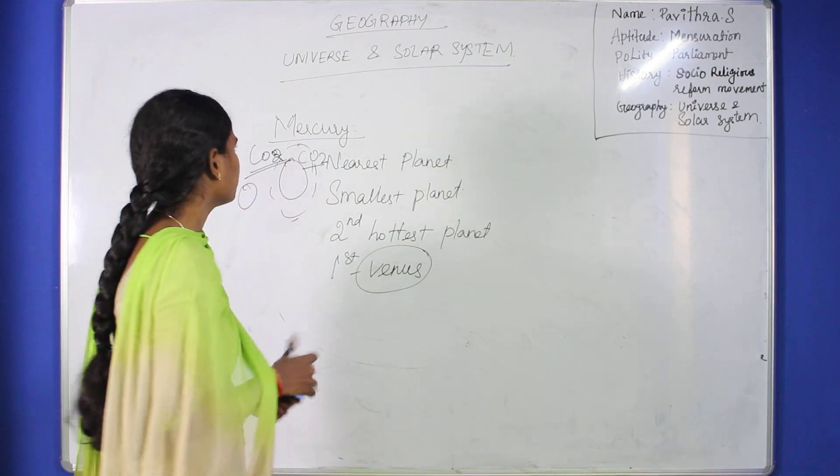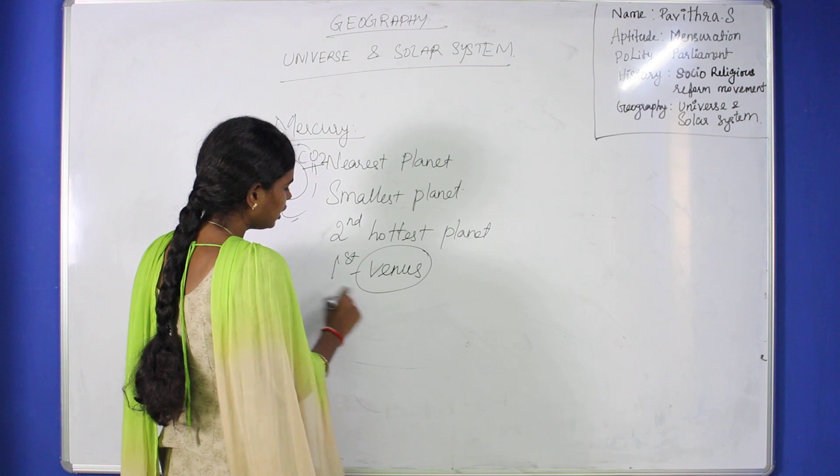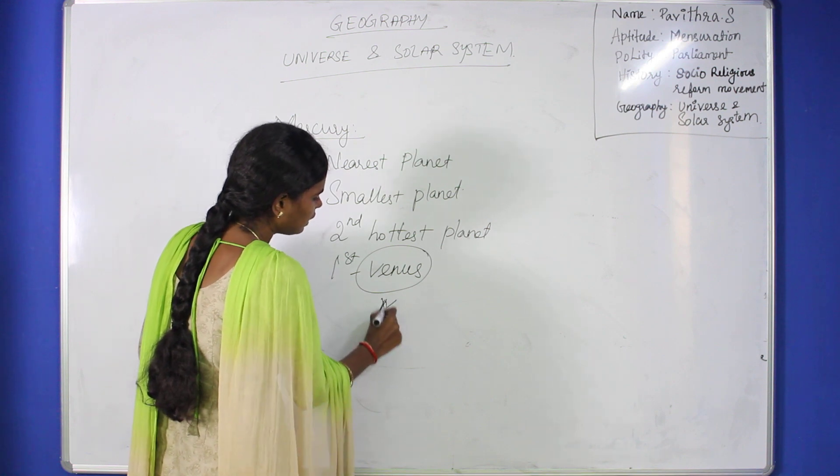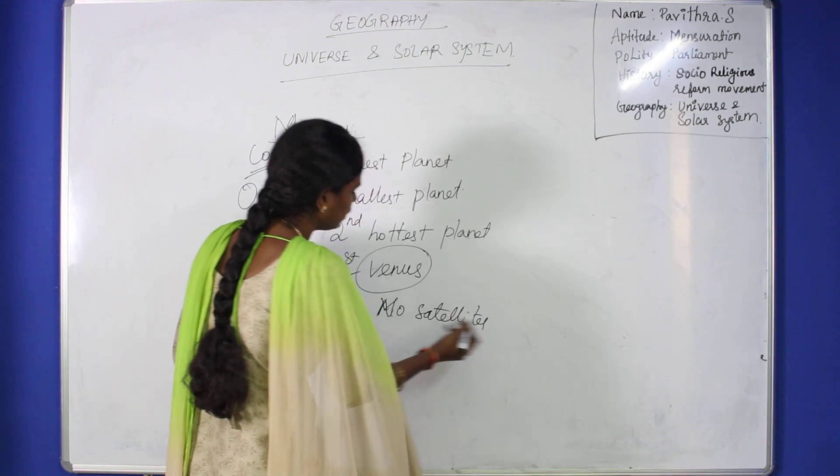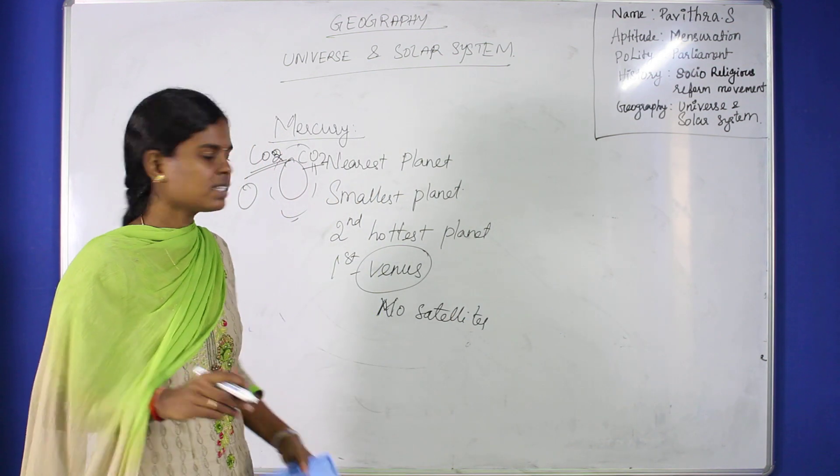Mercury is the second hottest planet. Mercury and Venus have no satellites. Within the eight planets, which planets have satellites? Mercury and Venus are the only planets without satellites.